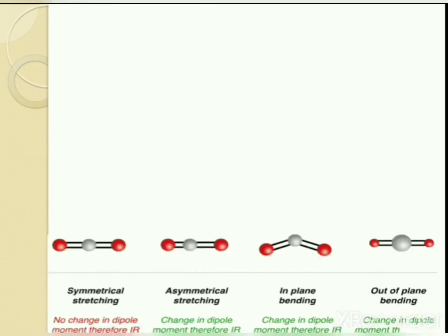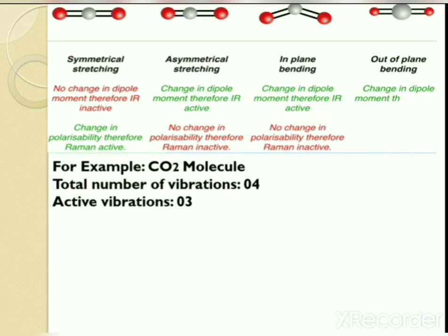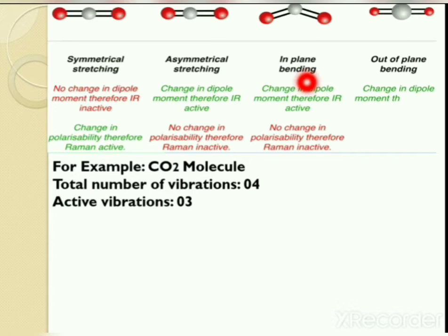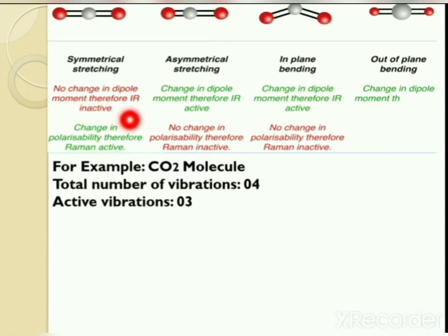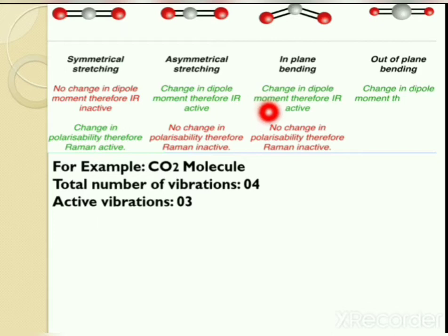We will understand Fermi resonance through this example. According to theoretical calculations, carbon dioxide molecules have a total of four vibrations: symmetrical stretching, asymmetrical stretching, in-plane bending, and out-of-plane bending. Symmetrical stretching produces no change in dipole moment and is therefore IR inactive. Asymmetrical stretching, in-plane bending, and out-of-plane bending produce a change in dipole moment and are therefore IR active, giving three active vibrations.